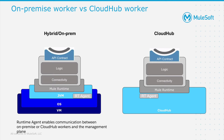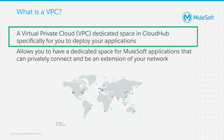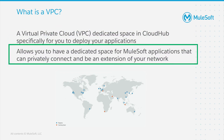CloudHub manages worker provisioning and scale-up for you. The workers are deployed into either MuleSoft's shared environment, or what we recommend is that a customer create a virtual private cloud, otherwise known as a VPC, for their workloads — and this is what we're going to focus on in this video. A virtual private cloud, or VPC, is a dedicated space inside of CloudHub specifically for you to deploy your applications separate from anyone else. This allows you to have a dedicated space for MuleSoft applications that can privately connect and be an extension of your own internal network.